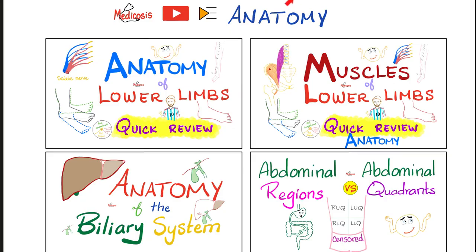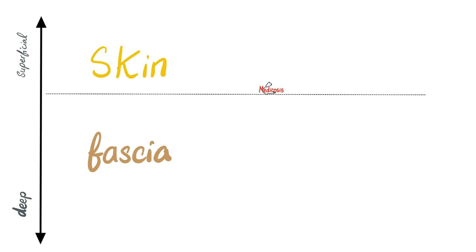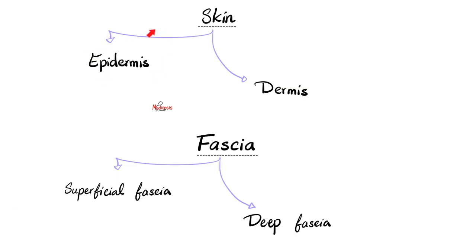This is my anatomy playlist. From superficial to deep, we have skin, and then deeper is the fascia. The skin is made of epidermis and dermis. The fascia is made of superficial fascia, and then deeper, deep fascia. And then if you go even deeper, internal fascia.